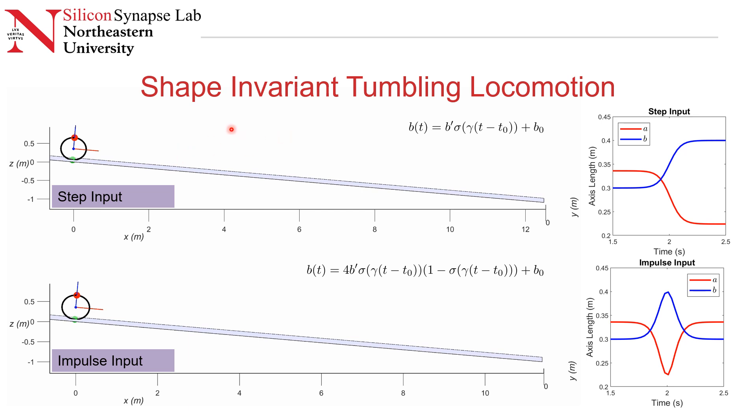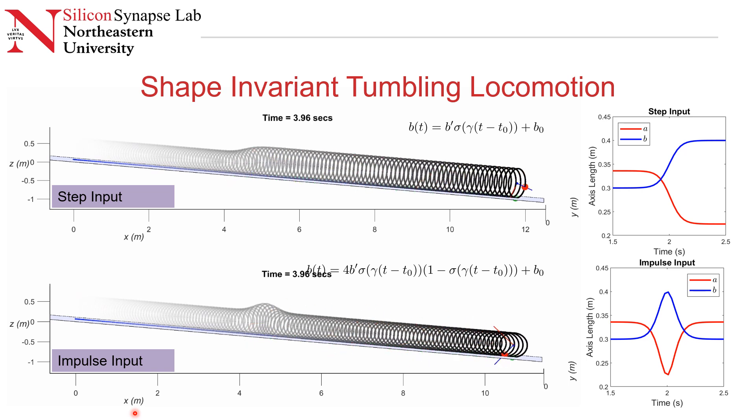We also consider a special form of tumbling locomotion called shape invariant tumbling locomotion. In shape invariant tumbling locomotion, as the robot rolls and the input is applied, as the length changes, it holds this new shape as it rolls. To an observer in the inertial frame, the overall shape of the robot is fixed with respect to the rolling. This lets us configure the inertia of the robot about the center of mass in a desired configuration, which affects the tumbling behavior and lets us control the heading and the speed of the tumbling locomotion.